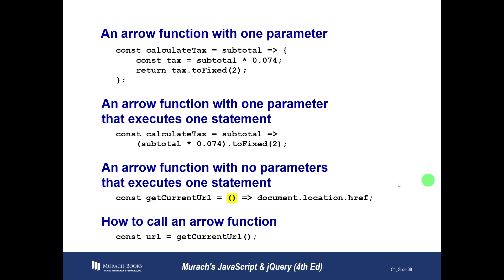If I want to call that arrow function, I can just call getCurrentURL with an empty pair of parentheses after it. It will run this function, get the document location, and return it, and I can store it in a constant here called URL.